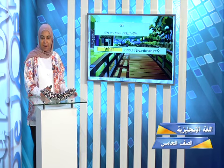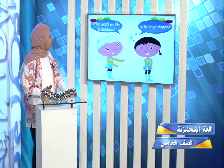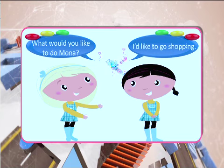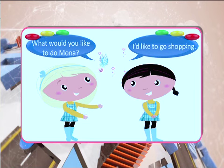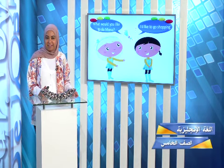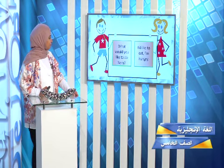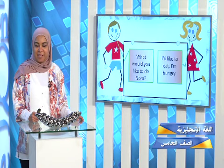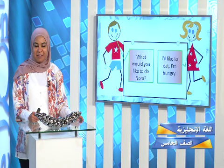Now we'll go for something completely different. Look at these two girls. What would you like to do, Munna? She's asking her friend. I'd like to go shopping. How about you? What would you like to do? I would like to read books. Another example: What would you like to do, Munna? I'd like to eat — I'm hungry. How about you? What would you like to do right now? Are you hungry? Would you like to eat? Are you thirsty?